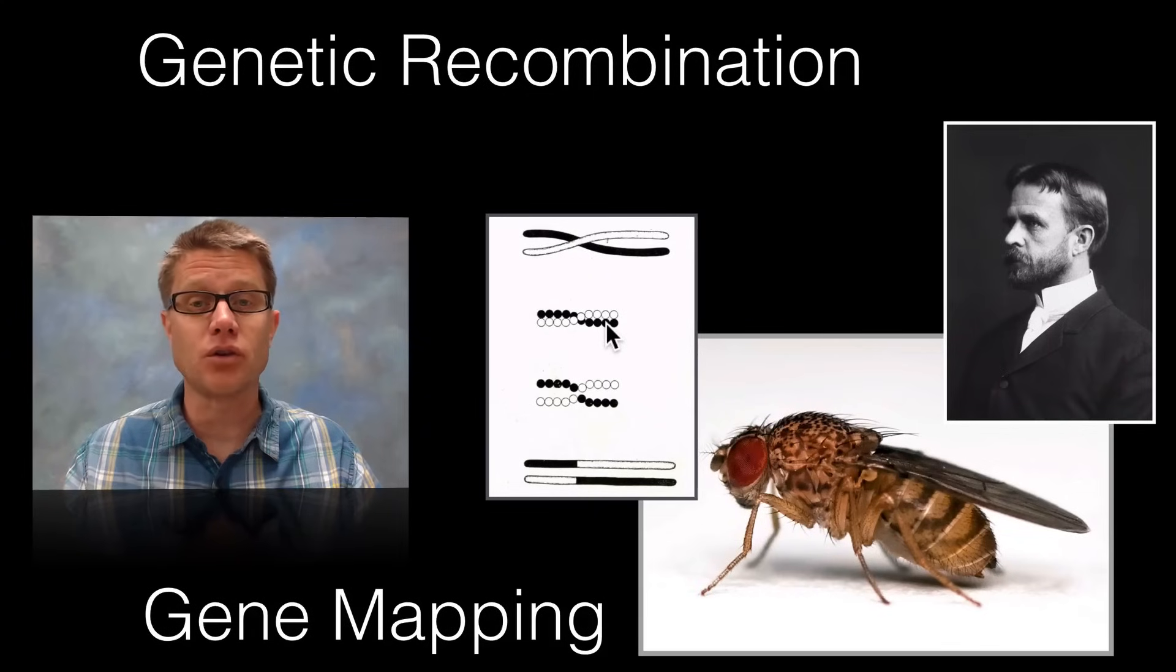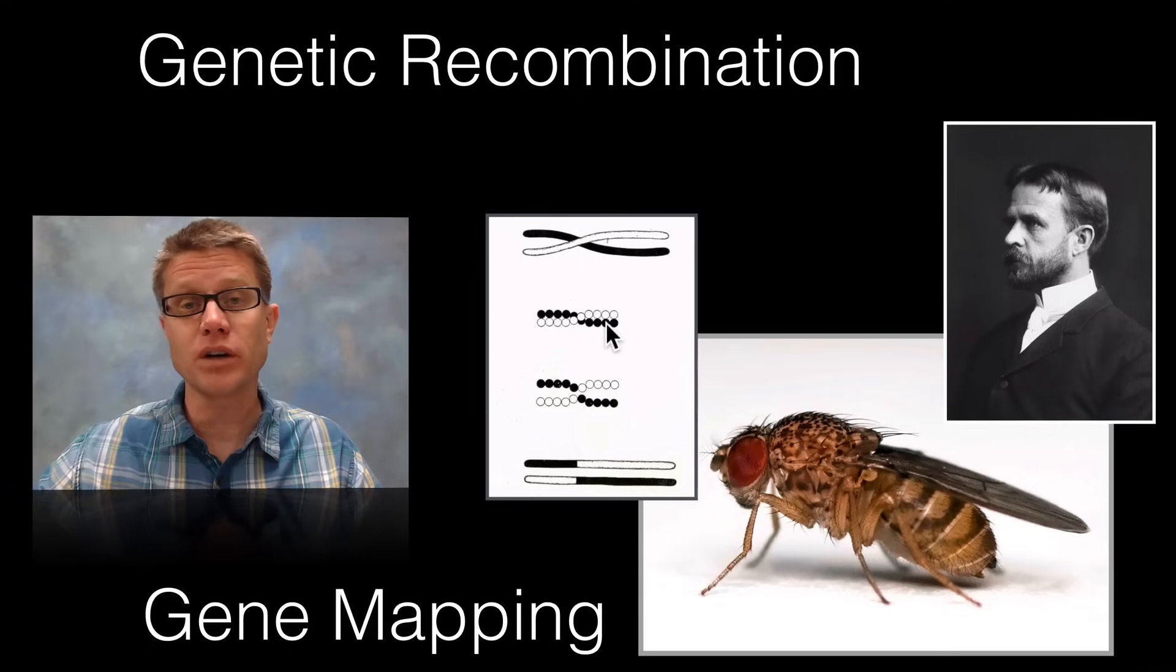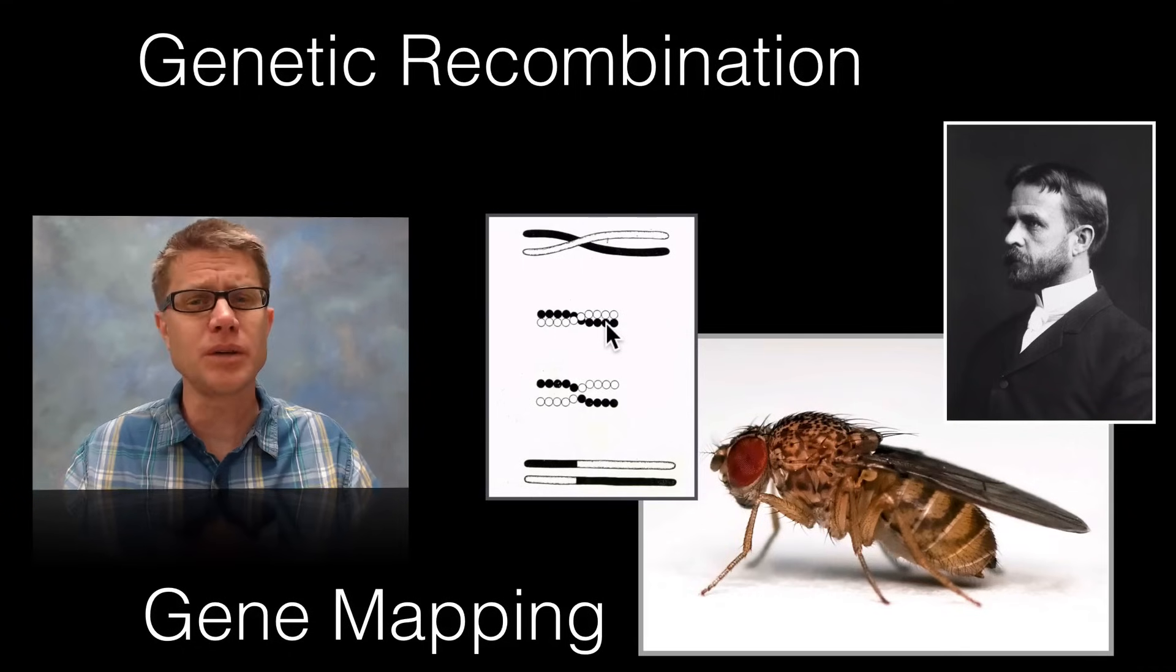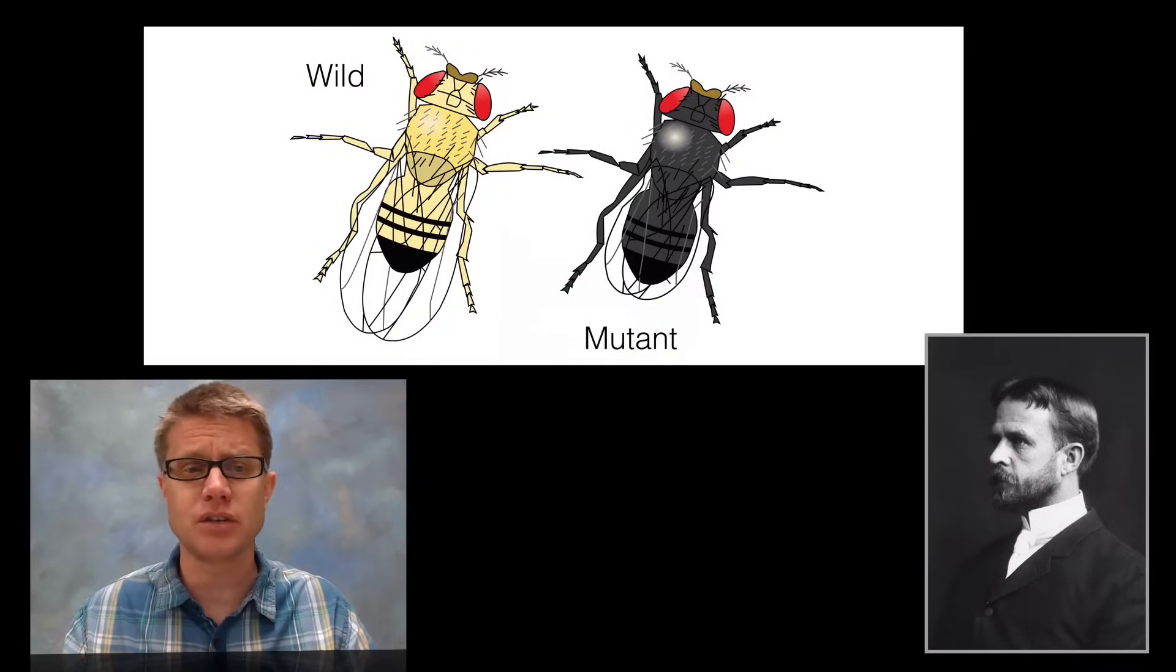And as those chromosomes undergo what's called crossing over, genes from one chromosome are actually going to swap position with genes from another chromosome. Before we get to that we should talk about fruit fly genetics for just a second.